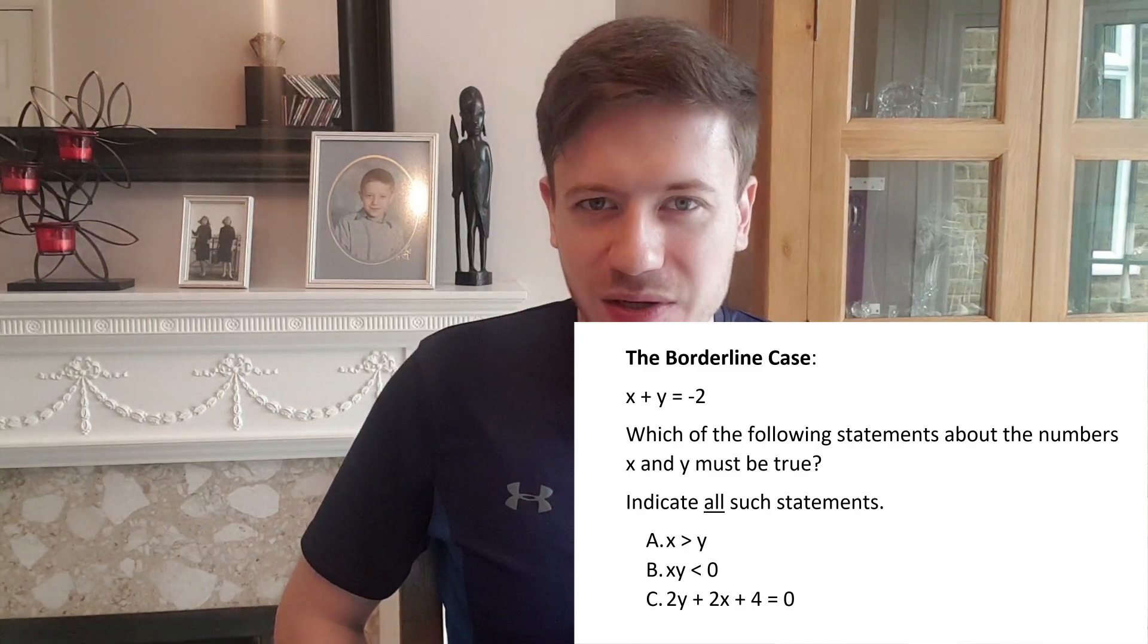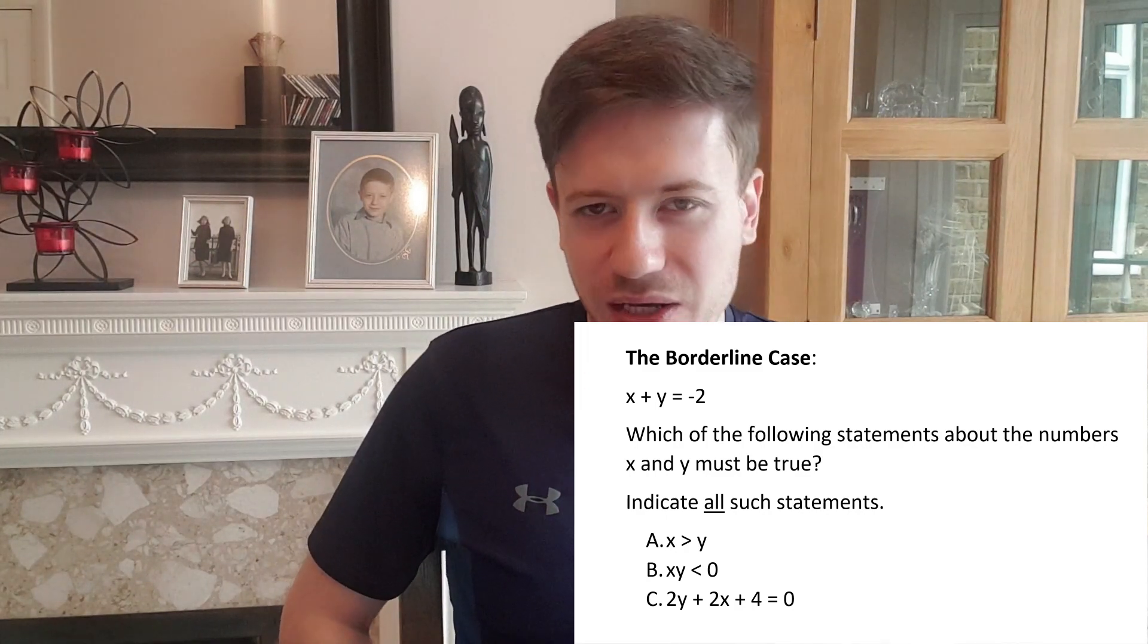Plugging x is minus 1 and y is minus 1 into the third equation gets you a correct result. 2 times minus 1 plus 2 times minus 1 plus 4 does indeed equal 0. And if you tried any other numbers for example x is minus 2 and y is 0 you would also find that the third equation holds true. So therefore we would conclude on the basis of the numbers we picked that the third equation is true.